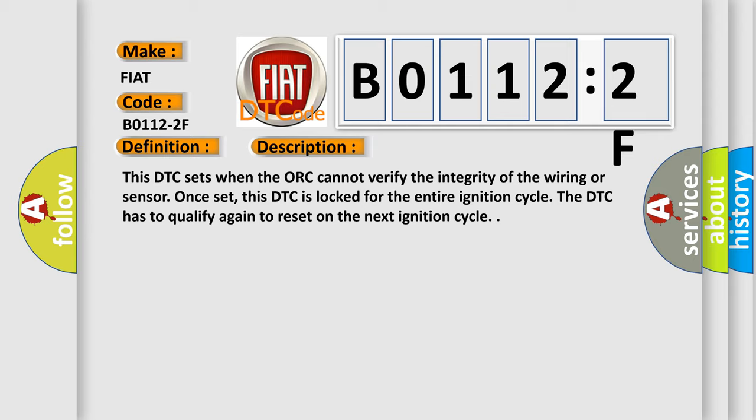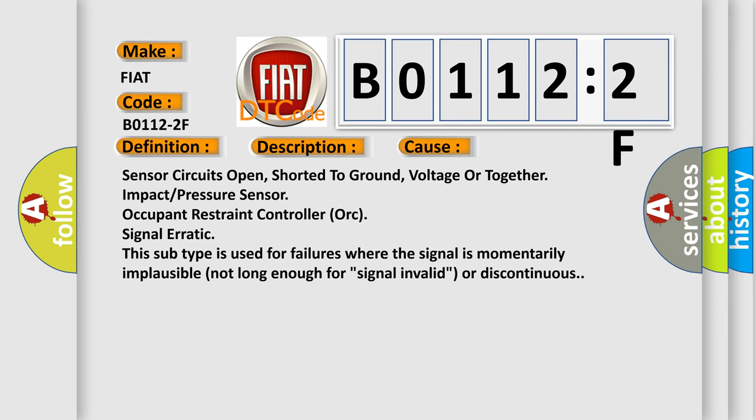This diagnostic error occurs most often in these cases: Sensor circuits open, shorted to ground, voltage or together. Impact/pressure sensor occupant restraint controller (ORC) signal erratic. This subtype is used for failures where the signal is momentarily implausible, not long enough for signal invalid or discontinuous.